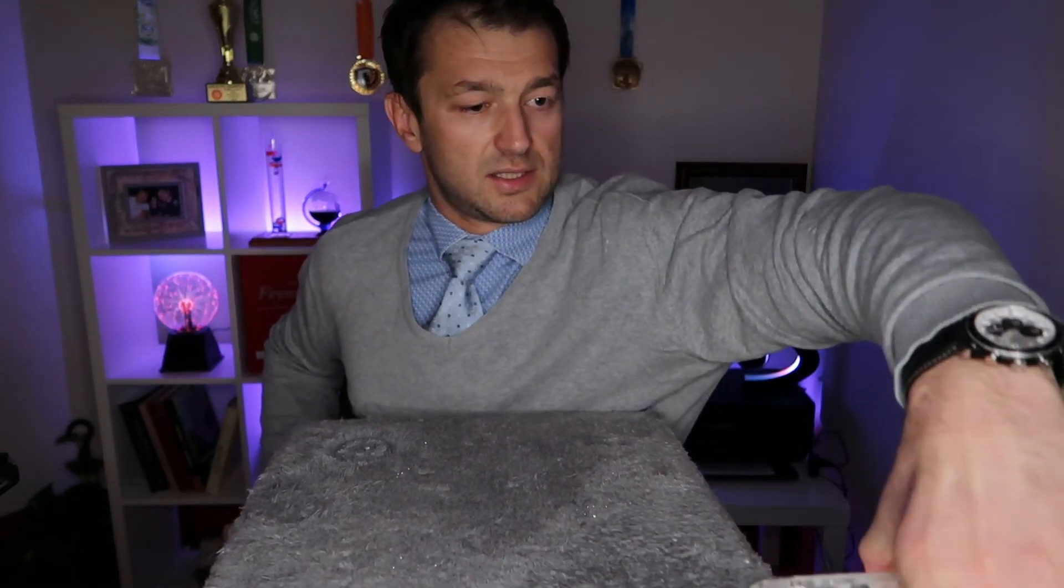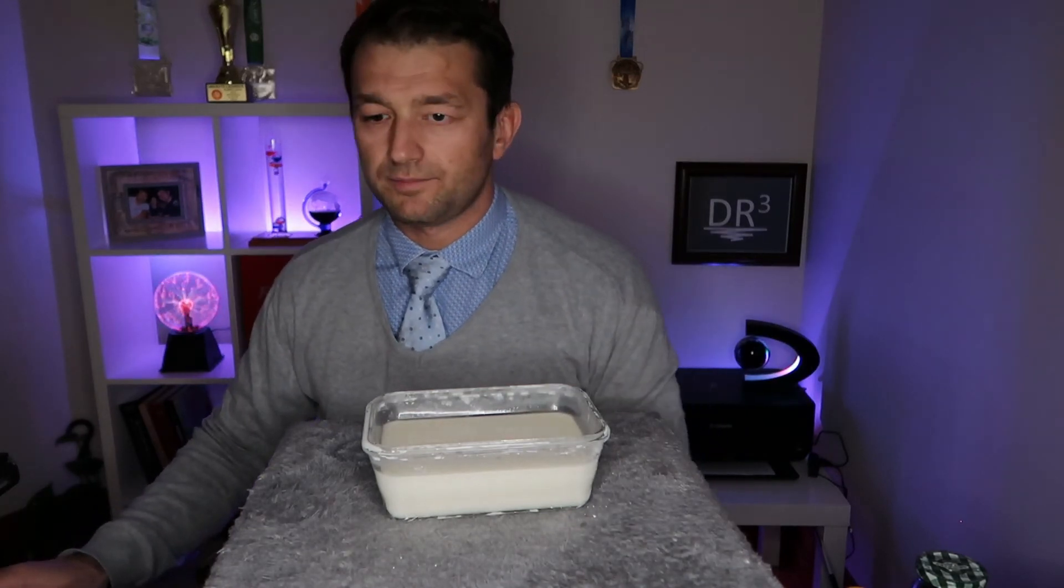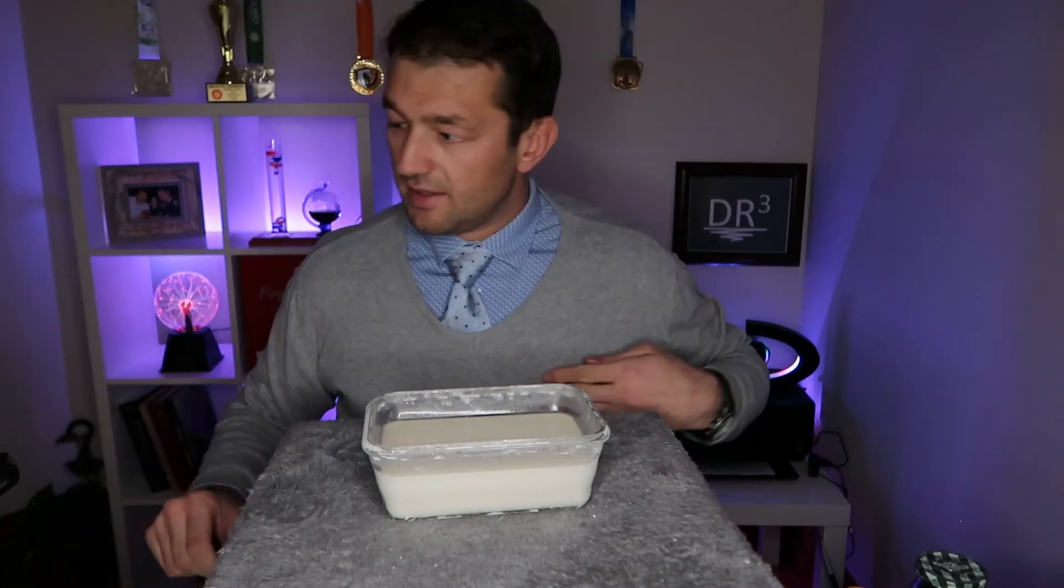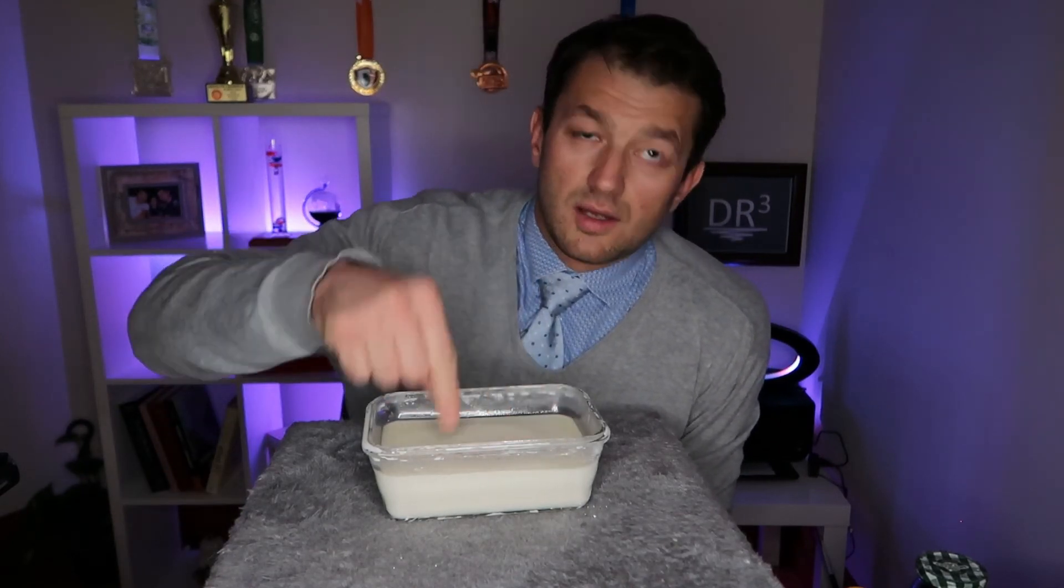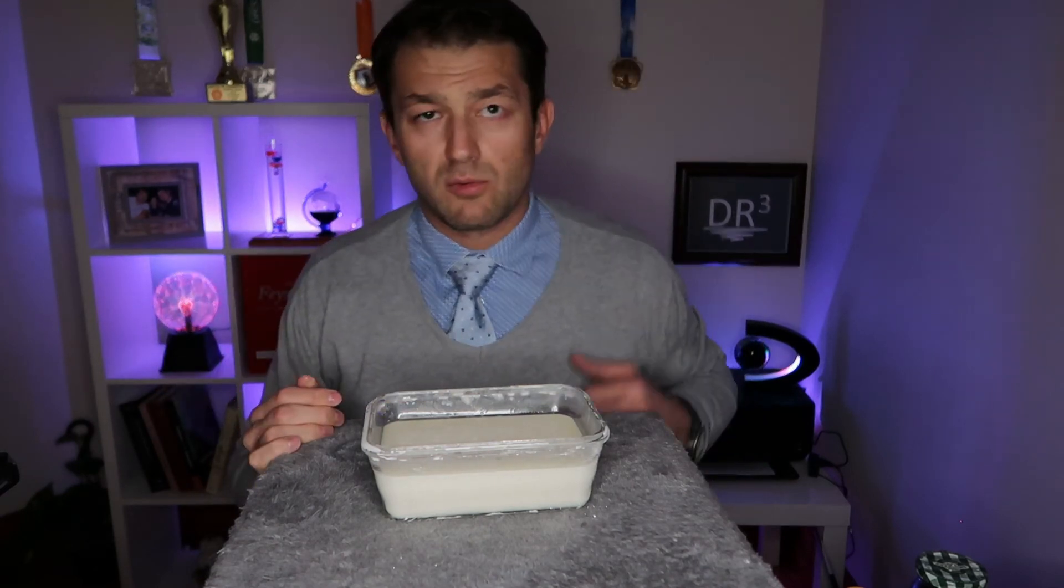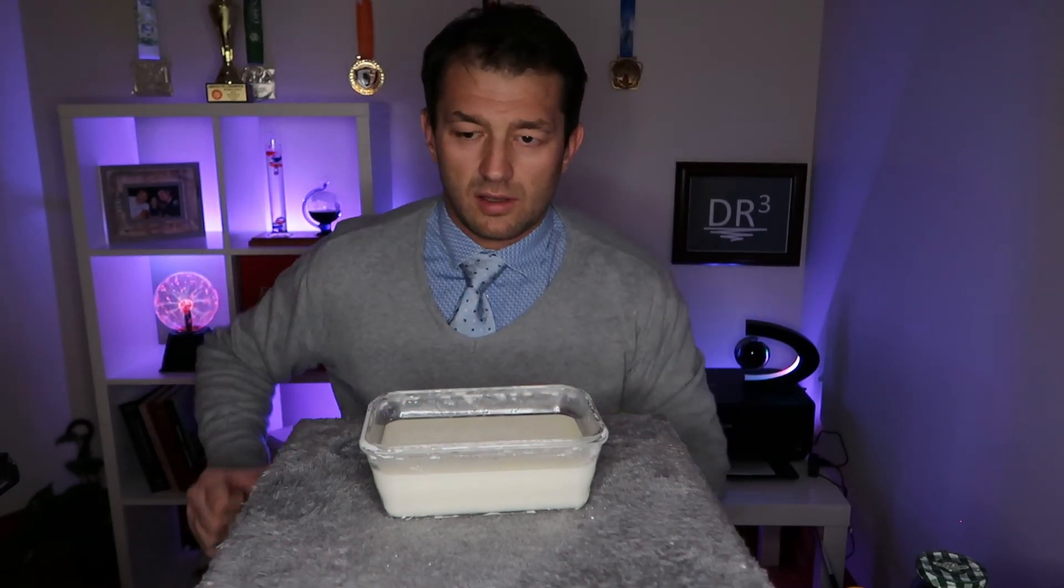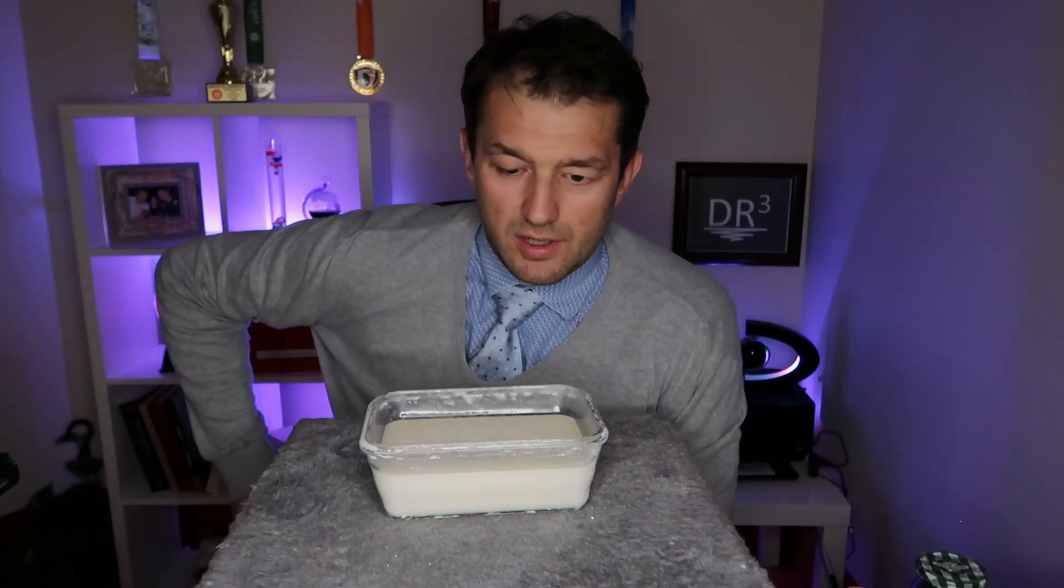At any rate, this is the ultimate non-Newtonian fluid that you can make in your kitchen. And this fluid is a mix of corn starch and water to a proportion either one to one or one to two. So for one unit of water, you add two units of corn starch.